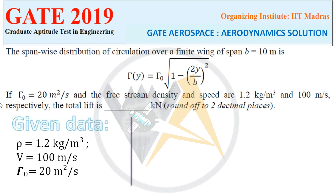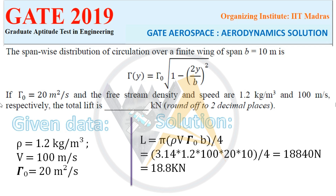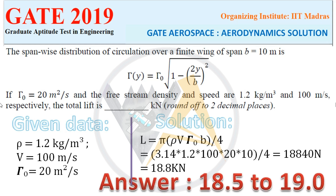Given: ρ = 1.2 kg/m³, V = 100 m/s, Γ0 = 20 m²/s, b = 10 m. Using the elliptic lift distribution formula L = π·ρ·V·Γ0·b / 4, substituting: L = 3.14 × 1.2 × 100 × 20 × 10 / 4 = 18,840 N = 18.84 kN, rounded to two decimal places. The acceptable answer range is 18.5 to 19.0 kN.